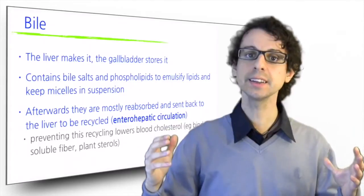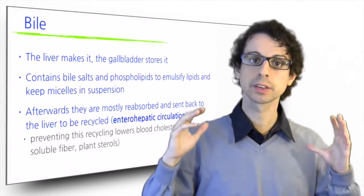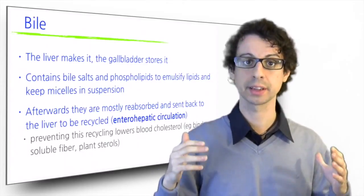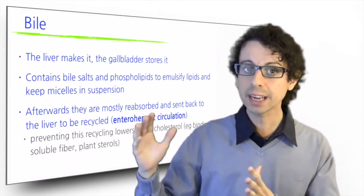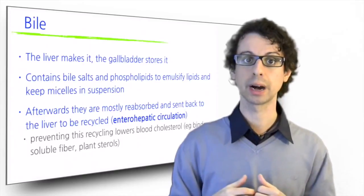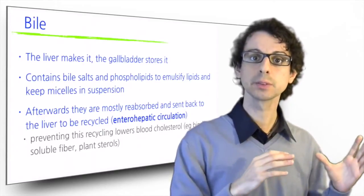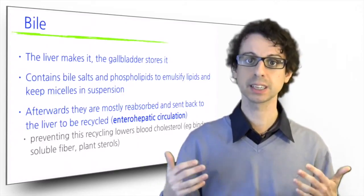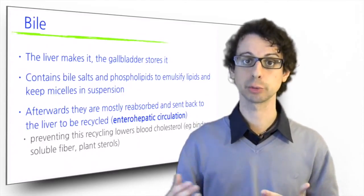After they have completed their task, bile salts are for the most part reabsorbed and enter the so-called enterohepatic circulation. They are sent back to the liver, which can recycle them to make new bile. The part that is not absorbed goes to the large intestine where it's further metabolized by gut bacteria and subsequently excreted.